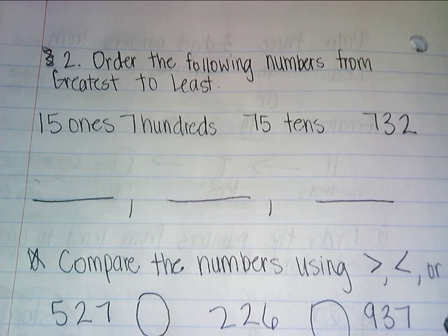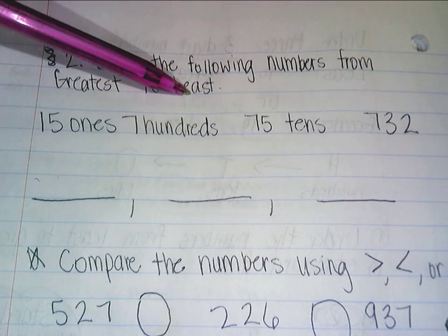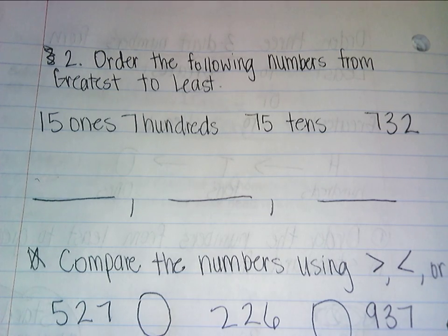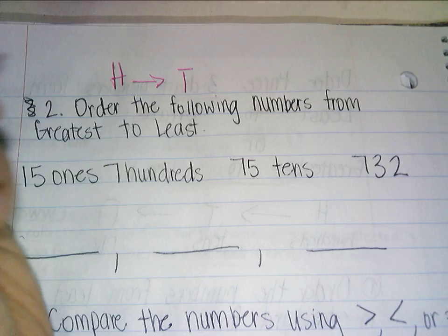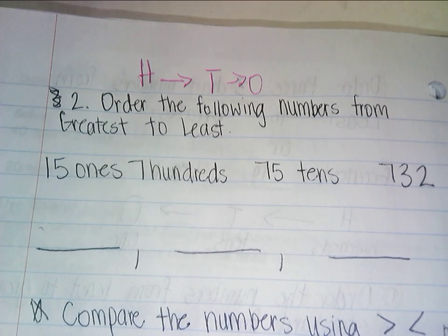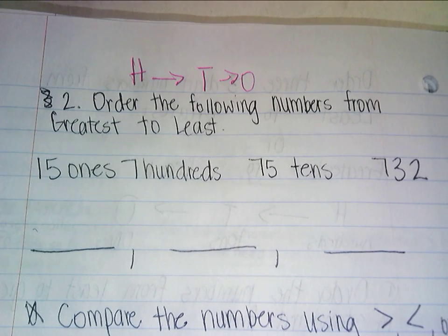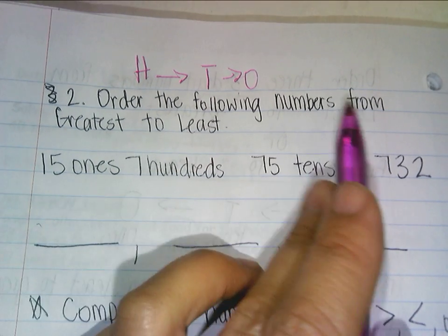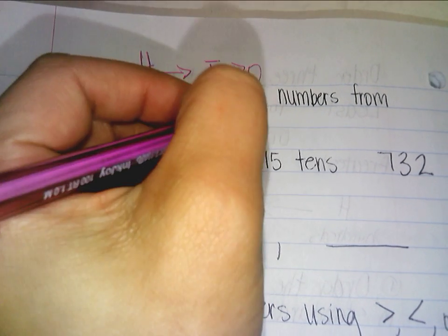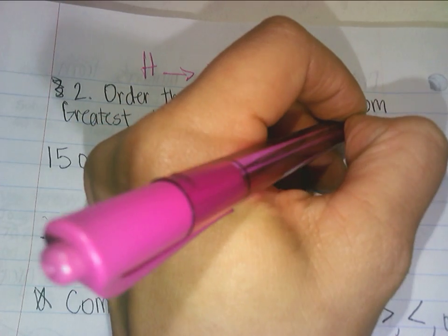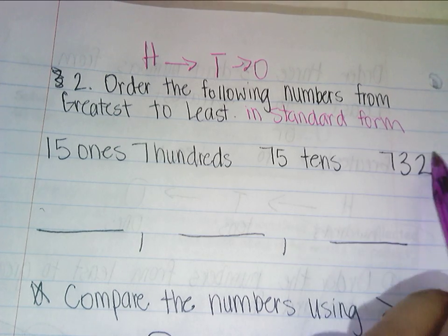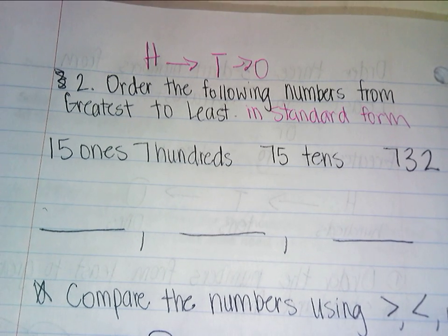Now we're going to do it the other way around. You're going to order the following numbers from greatest to least — so highest to lowest. When you're doing this, you still look at the hundreds, then the digit in the tens place, and then the digit in the ones place. It's still the same thing, but this time you're looking for the highest number to be listed first. Order the following numbers from greatest to least, and write them in standard form again.